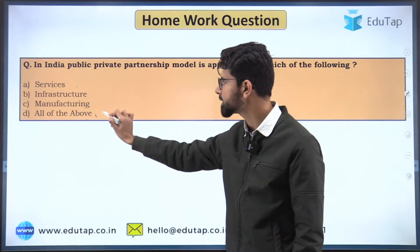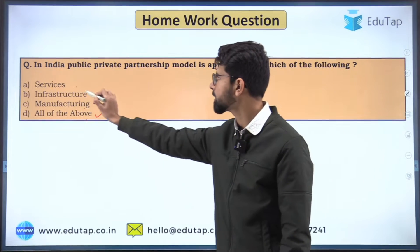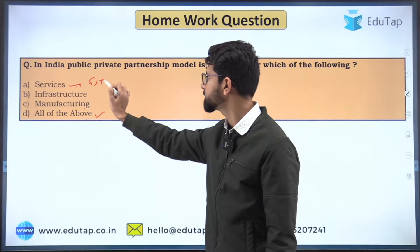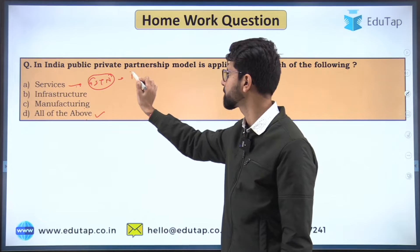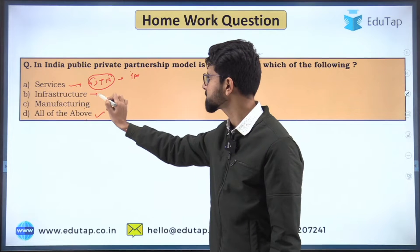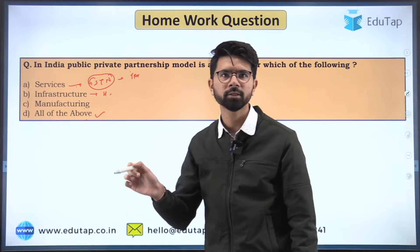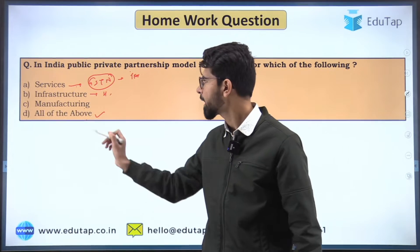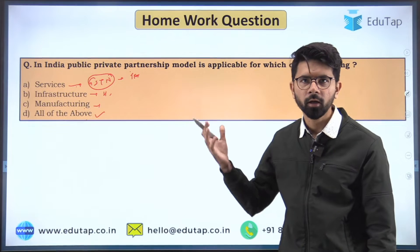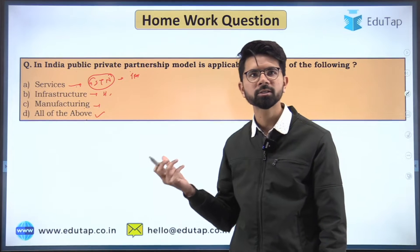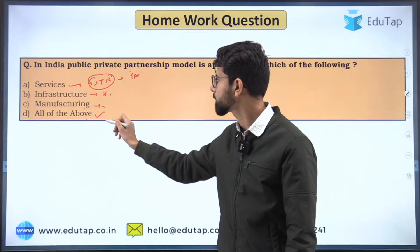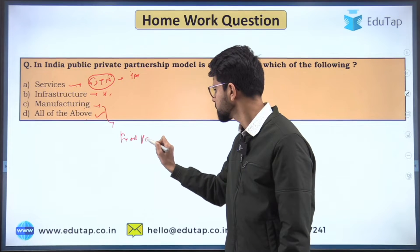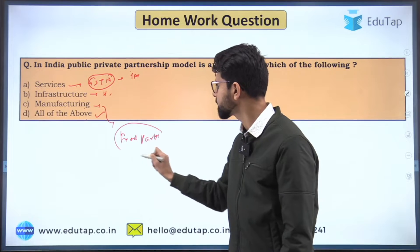In the last session I had given a homework question: in India, the public-private partnership model is applicable for which of the following — services sector, infrastructure, manufacturing, or all of the above? The answer is all of the above. In the services sector, the GST network is an example of the Triple P model. In infrastructure, all the highways, airways, and airports are built on this model. In the manufacturing sector also the government is deploying this Triple P model — for example, food parks are built using the Triple P model.